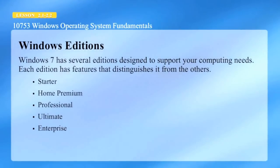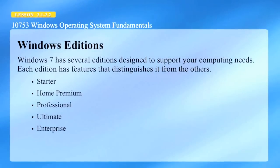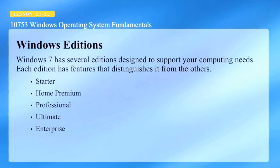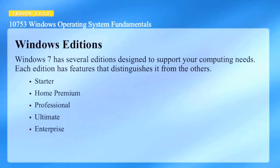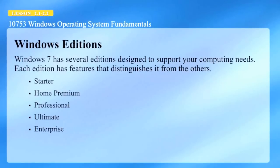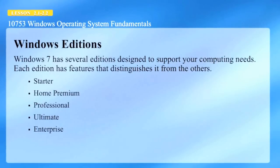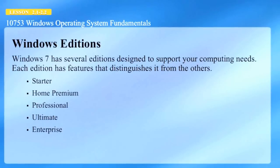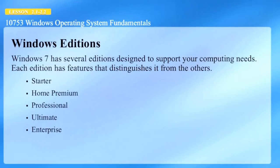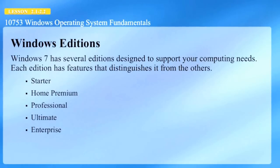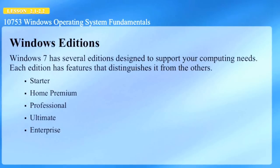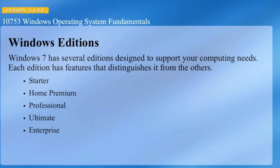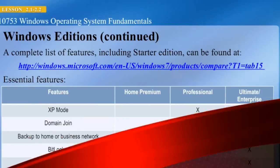Here we're looking at Windows 7 Editions. We have Starter, Home Premium, Professional, Ultimate, and Enterprise. Each one of these versions includes the previous version's capabilities. So Home Premium includes the capabilities of Starter. Ultimate includes the abilities of Professional, Home Premium, and Starter, plus the Ultimate capabilities.